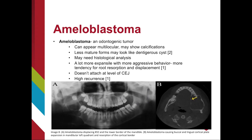Ameloblastomas are a type of odontogenic tumor that can appear multilocular with calcifications. The less mature forms may look like dentigerous cysts, which would indicate a histological analysis to differentiate. Ameloblastomas are more expansile due to more aggressive behavior; therefore, root resorption and displacement are also seen. These lesions do not attach to the CEJ like dentigerous cysts do, and the recurrence rate is high for ameloblastomas. The expansion of the cortical bone can be seen in the CBCT image.